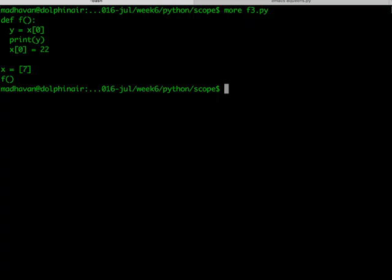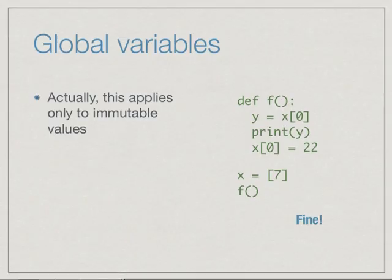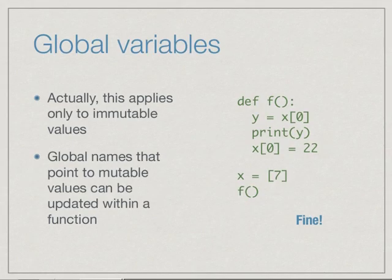Here we have this function in which we now change x from an integer to a list. We try to assign it in y but we update that list inside the function. And then if we run it, it does print the value 7 as we expect. So this works. If we have a mutable value, then we can actually change it inside f and nothing will happen.